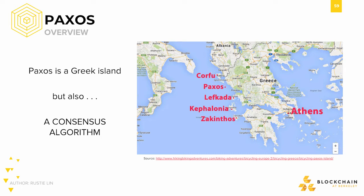The reason Paxos is named the way it is, is because the original white paper was titled The Part-Time Parliament. In the paper, Lamport told a story of how the ancient Paxon Parliament used the Paxos algorithm to pass decrees and make sure everyone on the island was in consensus of the latest law. It was called the Part-Time Parliament because legislators were known to leave sporadically to attend banquets and other outside activities. No one was willing to remain in the chambers at all times, and they didn't have secretaries either. So instead, each Paxon legislator maintained a ledger where they'd record everything that happened.